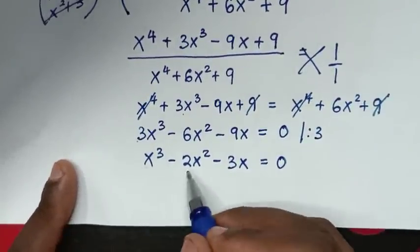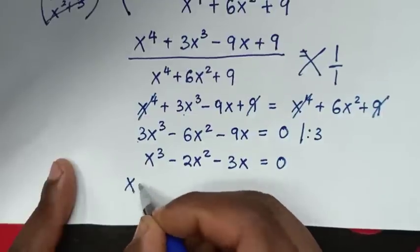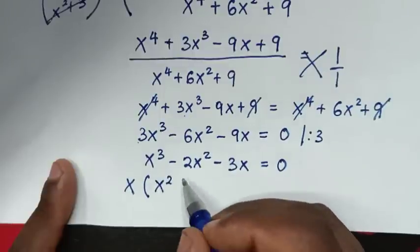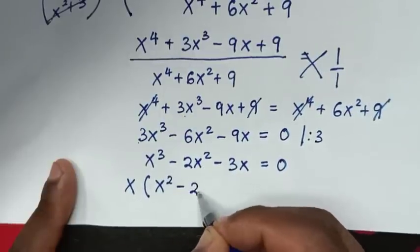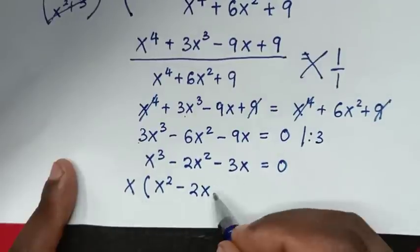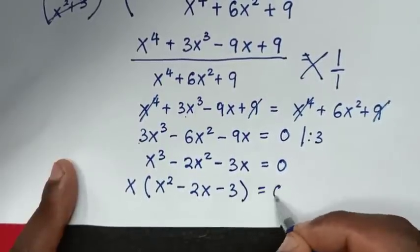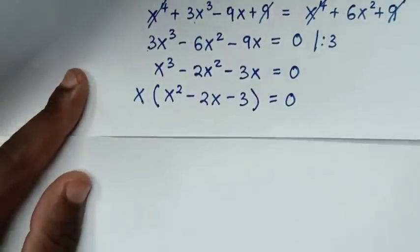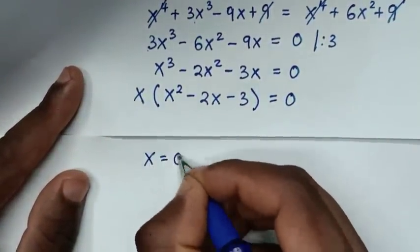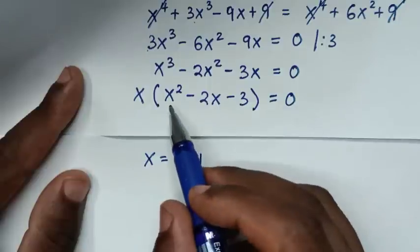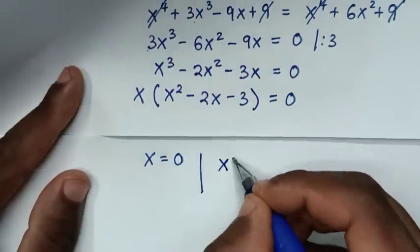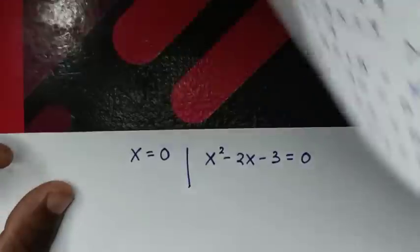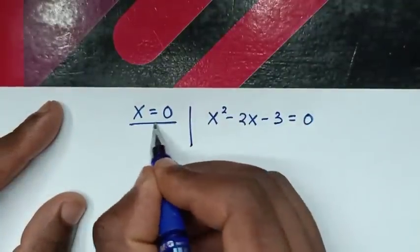From here, x is common, so we factor out x: x(x² - 2x - 3) = 0. Then we have two solutions: the first solution is x = 0, and the second solution is x² - 2x - 3 = 0. So we already get the first value of x which is 0.